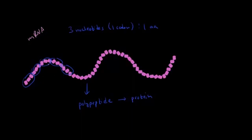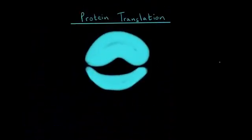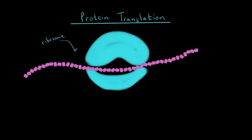So the question is: how do we get from this piece of mRNA to the polypeptide that we want? In other words, how do we read this piece of mRNA? The answer is through a process known as protein translation. Protein translation happens in an organelle in a cell called the ribosome. So protein translation is the process by which we take a piece of mRNA and run it through the ribosome.